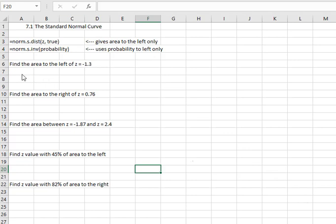So for this first one, we want to find the area to the left of z equals negative 1.3. And so what I'll do is I'll sketch a quick normal curve. Z is 0 in the middle and negative 1.3 is off to the left of that and I want the area to the left.